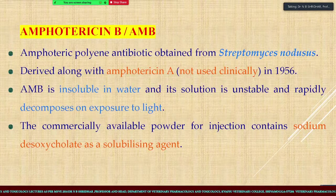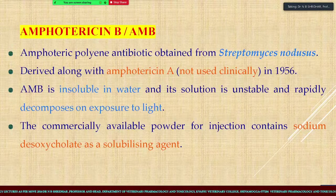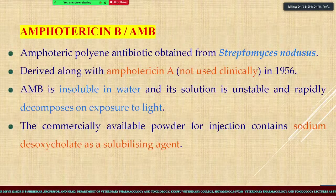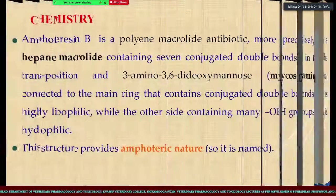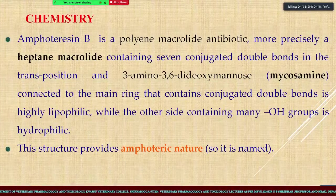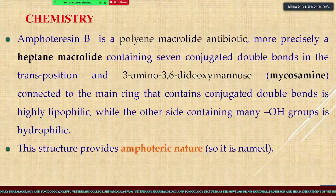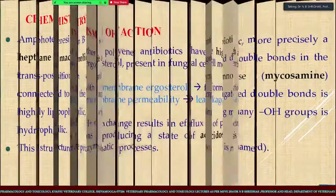The commercially available powder for injection contains sodium deoxycholate as a stabilizing agent. The structure of Amphotericin B and its chemistry have already been dealt with. It is amphoteric in nature.